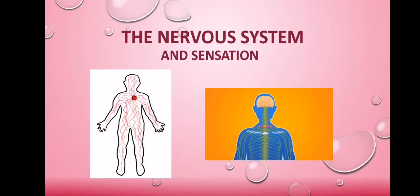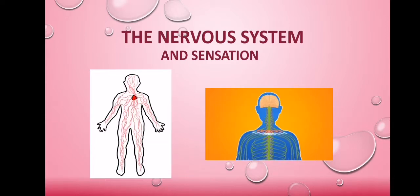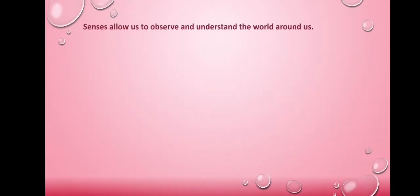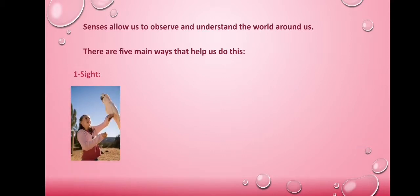It is our nervous system which controls all of our senses. So what are these senses? Senses allow us to observe and understand the world around us. There are five main ways that help us through this. Sight — we see by our eyes, and eyes are sensory organs.